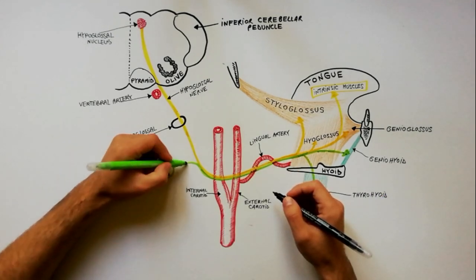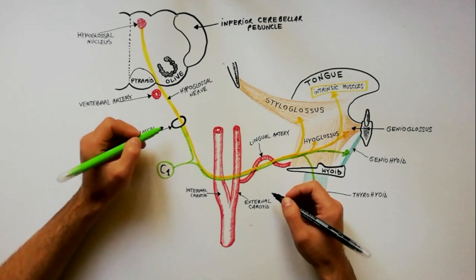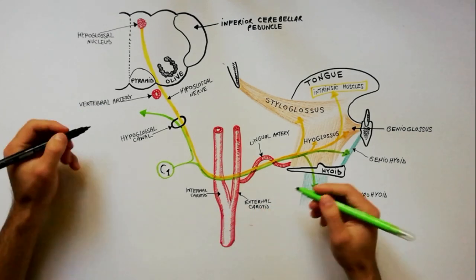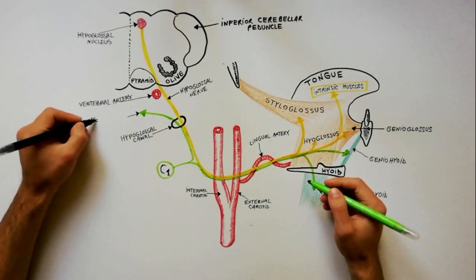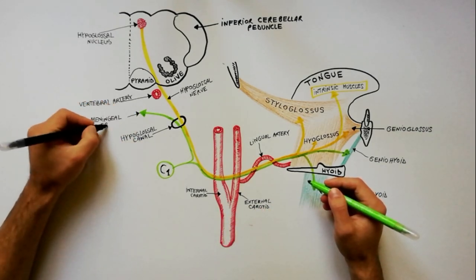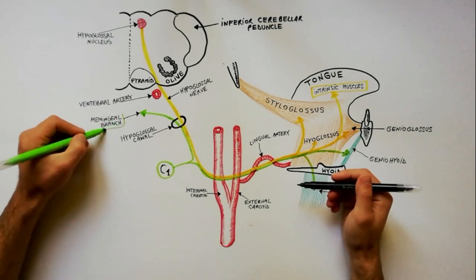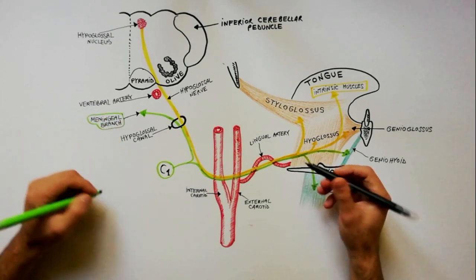Some fibers from the C1 spinal nerve have a recurrent course, traveling along the hypoglossal nerve to enter the cranial cavity by way of hypoglossal canal as the meningeal branch to supply the dura matter of the posterior cranial fossa.